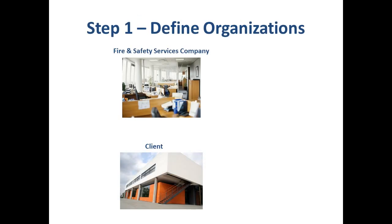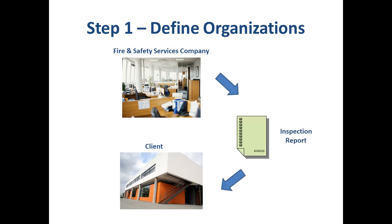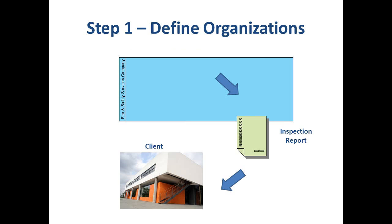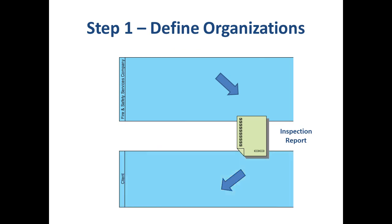A business process often involves communications between different companies or departments. In our example, the fire and safety services company may issue an inspection report to its client when available, so it's important that we define organizations first. In BPMN, we use a pool to represent an organization. So in the Business Process Diagram, the fire and safety services company will become a long bar with a name on the left, and similarly the client will look like this.